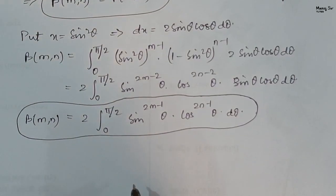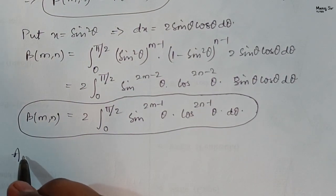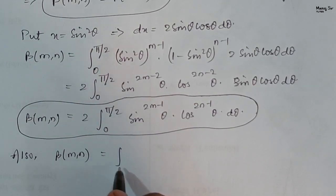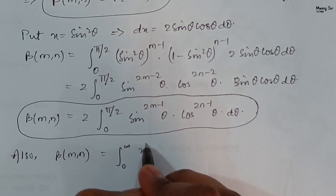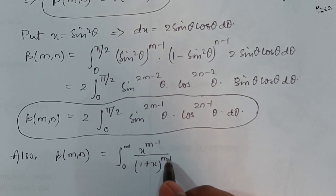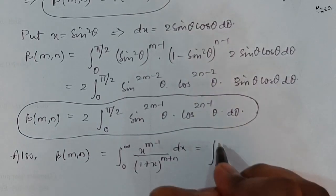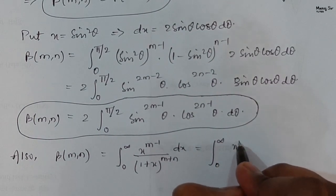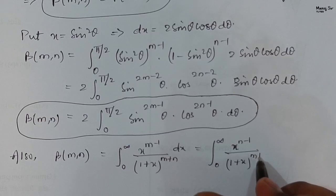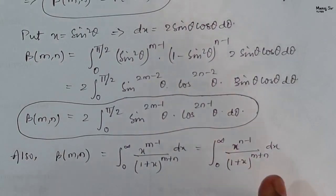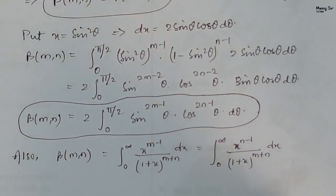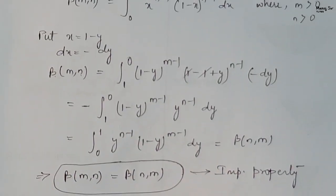We also have another formula for beta function. Beta of m comma n equals integration from 0 to infinity of x to the power m minus 1 upon 1 plus x to the power m plus n dx. This is again an important formula that is used while solving beta function problems.